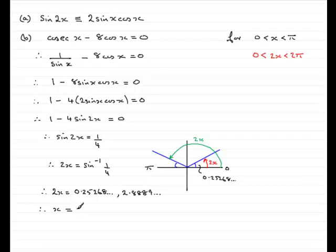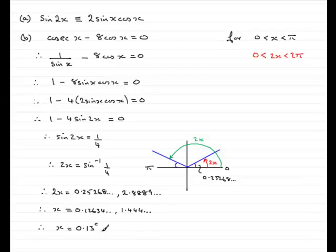So x is going to be 0.12634 from the first value, and dividing 2.8889 by 2 gives us 1.444. We've got to give x to two decimal places. So x equals 0.13 radians for the first solution, and 1.44 radians for the second solution — both to two decimal places.